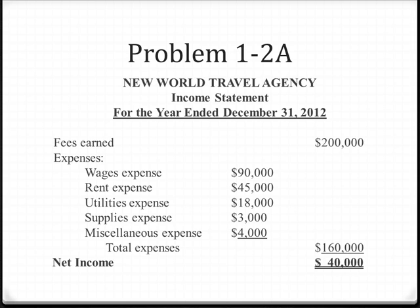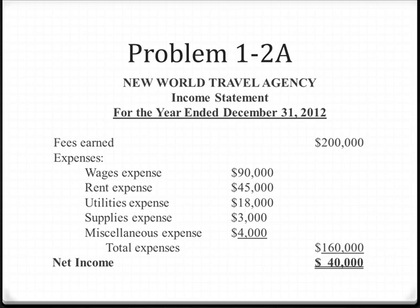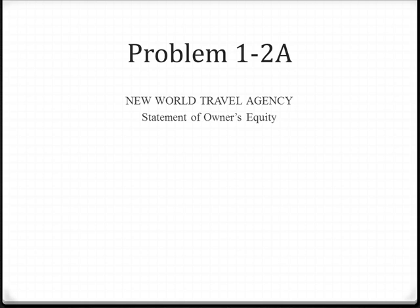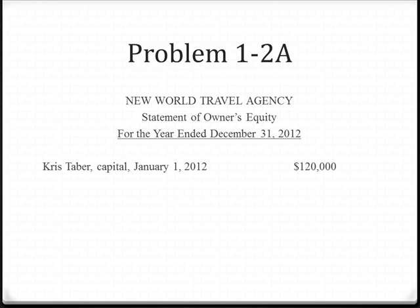The next statement we want to create is the statement of owner's equity. We start with the title of the company, the name of the statement, and the period for which the statement is being created — for the year ending December 31, 2012. The first thing we want to list is the beginning capital. The problem stated that as of January 1st, Chris Tabor started off with $120,000 in capital. If we had any additional investments we would list those; however, if there are no additional investments, we then list the net income for the year. We determined the net income was $40,000 on the income statement, so we're going to bring that in and list it here.